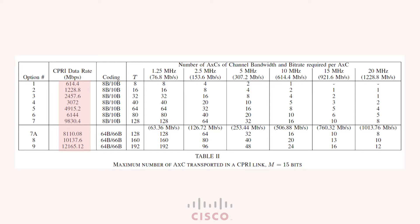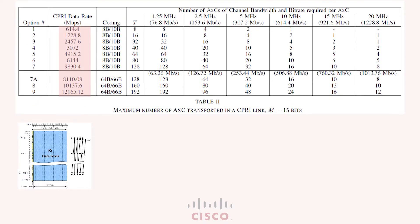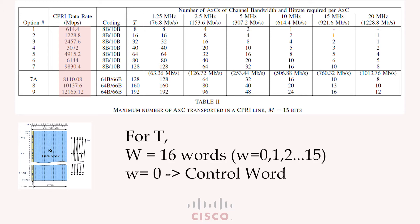Now let us break down one CPRI basic frame. The length t of each word depends on the CPRI line bit rate option. The first word, w equals 0, is reserved for control information while the other 15 words are used to carry IQ data samples.